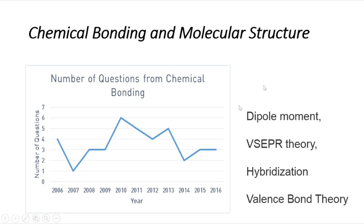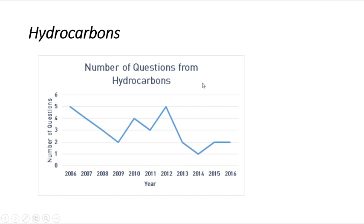Now we will see the topics with number of questions distributed in each year. For example, in 2006 chemical bonding and molecular structure had four questions in the NEET examination, whereas in 2007 it was only one question. In the last two years around three questions have been asked, with a maximum of six questions asked in 2010.